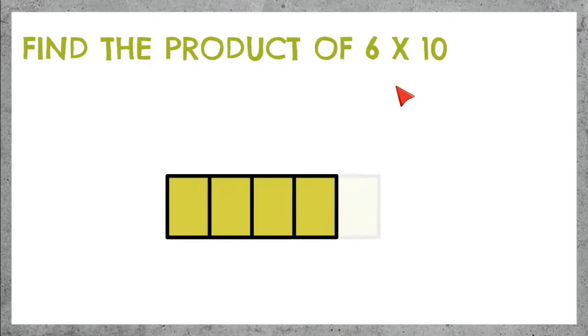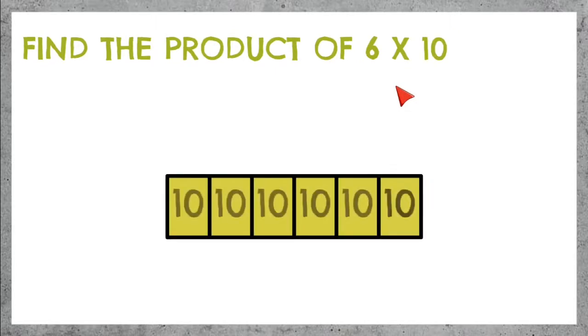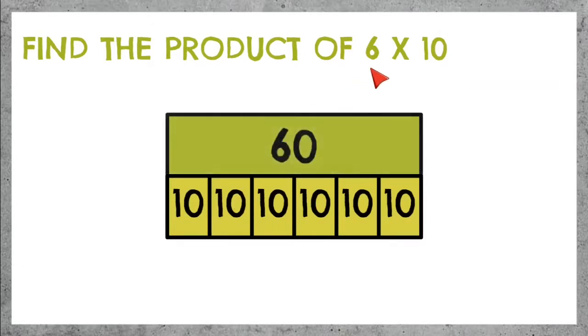6 times 10 — 6 parts with 10 in each one. We can add up 10 six times, which makes 60. 6 times 10 equals 60.